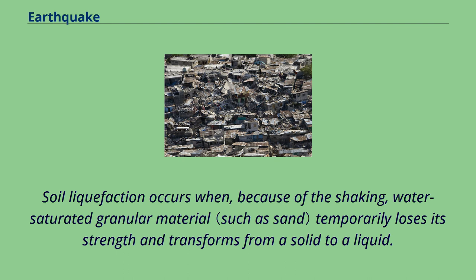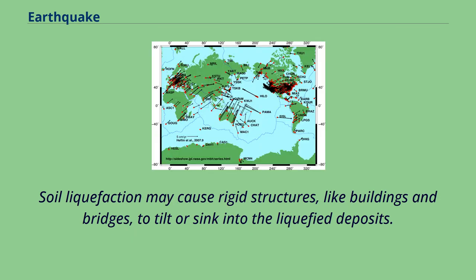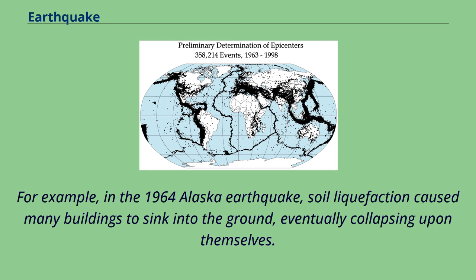Soil liquefaction occurs when, because of the shaking, water-saturated granular material temporarily loses its strength and transforms from a solid to a liquid. Soil liquefaction may cause rigid structures like buildings and bridges to tilt or sink into the liquefied deposits. For example, in the 1964 Alaska earthquake, soil liquefaction caused many buildings to sink into the ground, eventually collapsing upon themselves.